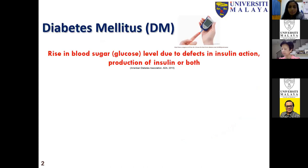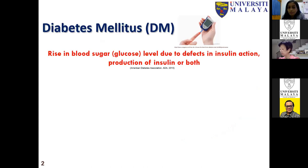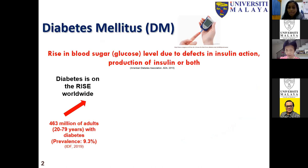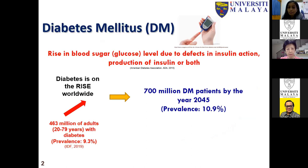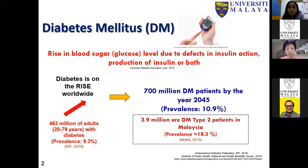Diabetes mellitus is defined as a rise in blood glucose level due to defects in insulin action and insulin production, or both. The disease is on the rise worldwide — 463 million adults have been diagnosed with diabetes up to 2019, and it is expected to hit 700 million by the year 2045. In Malaysia, the prevalence rate has actually reached 18.3% based on statistics up to 2019.